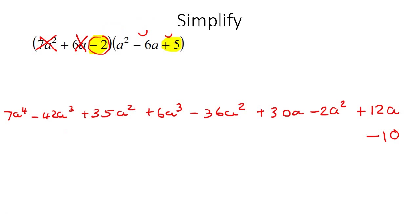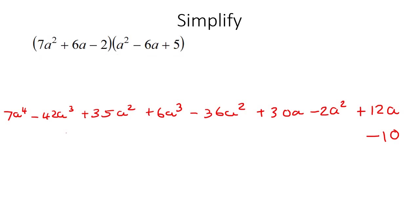What you'll notice is that we've done 9 multiplications in total — there are 3 terms in one bracket and they each had to multiply with every one of the 3 terms in the other bracket, so 3 times 3 is 9. If you count all of these you get 9, so we know we haven't left anything out.